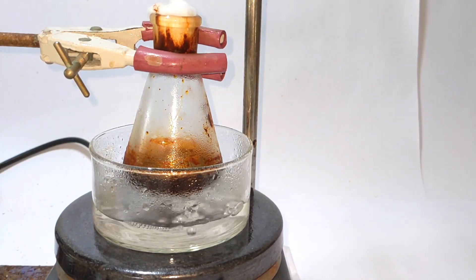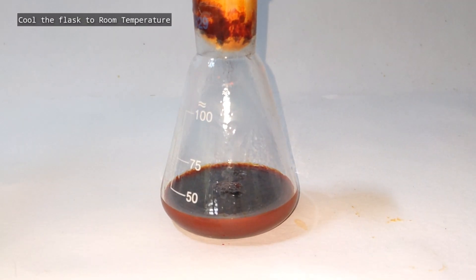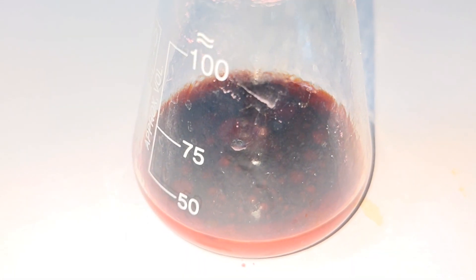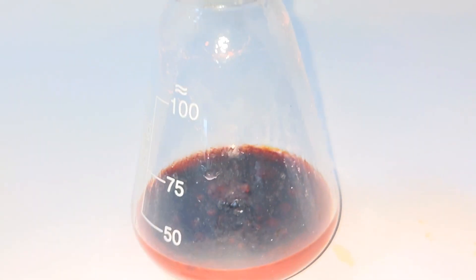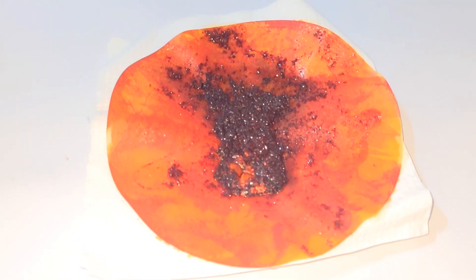Now the flask is allowed to cool to room temperature and you can already appreciate the crystals starting to form. The flask was then placed in a refrigerator overnight and the next day the crystals were separated out.